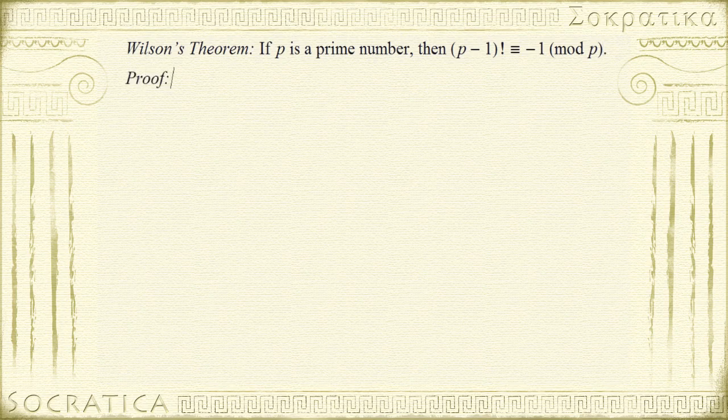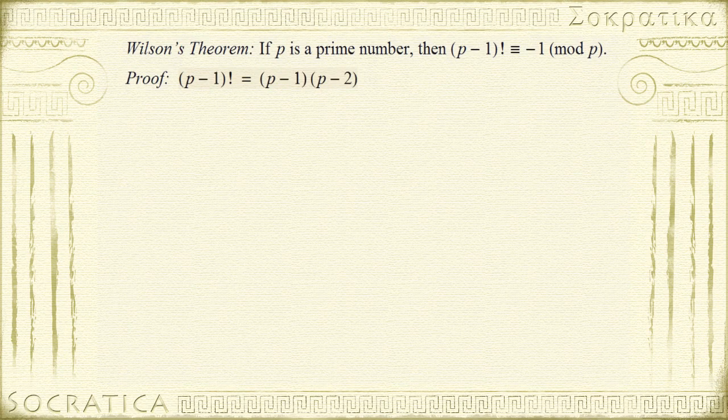To show that this is true, let's first expand out the left-hand side of this, p minus 1 factorial. If you write it out in full, it's p minus 1 times p minus 2 on and on times 3 times 2 times 1.